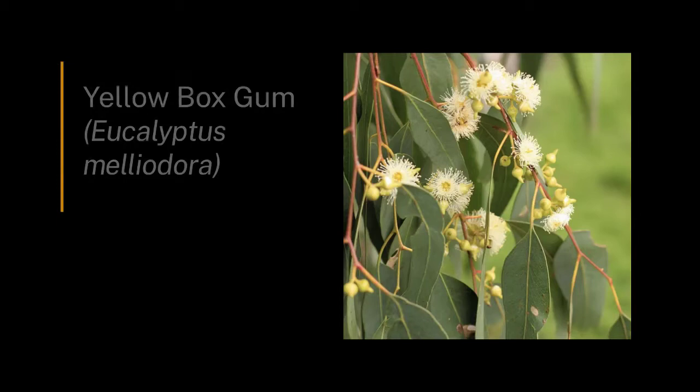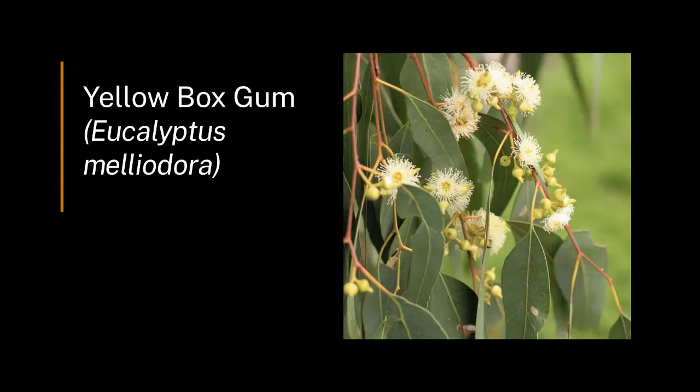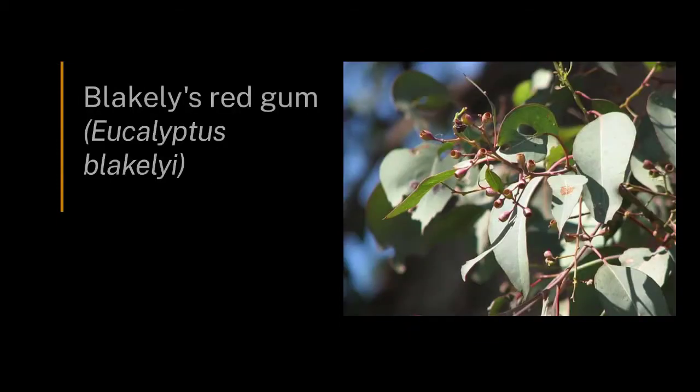Mulligan's Flat is a box gum grassy woodland, which means it's characterised by two types of trees: Yellow Box — and there's a few of them behind me over there — and Blakely's Red Gums.